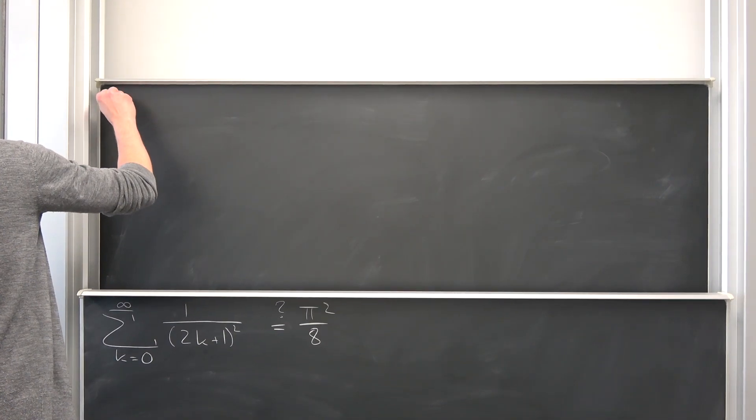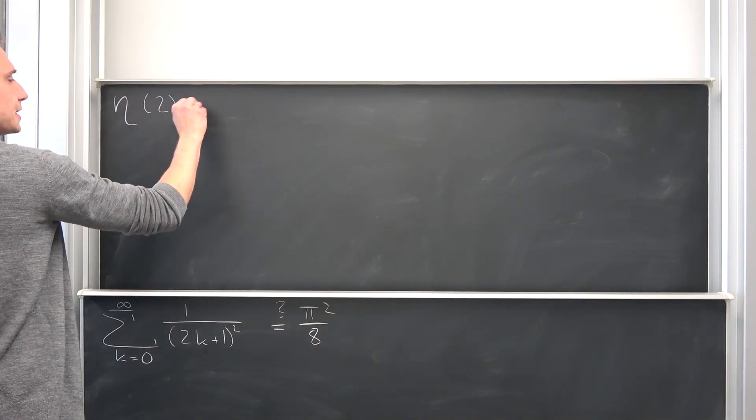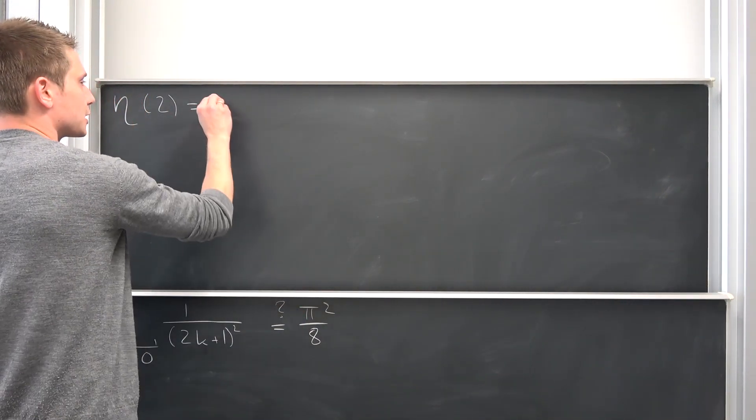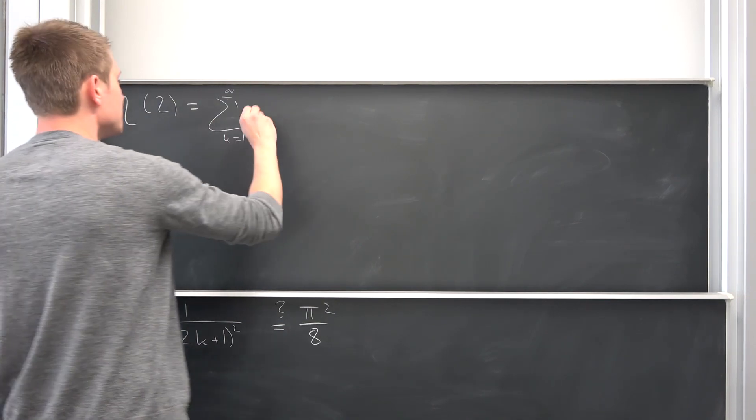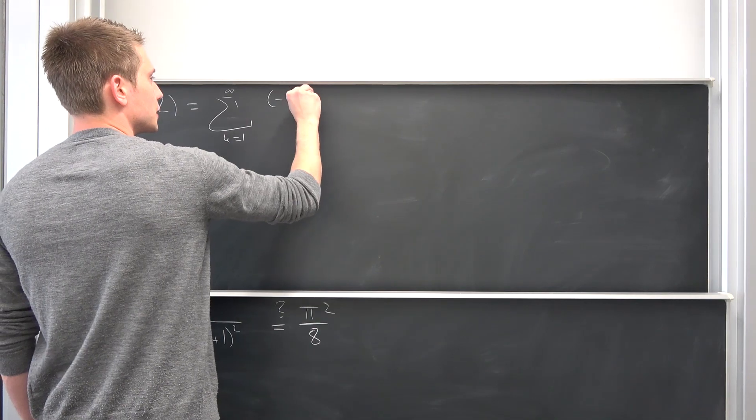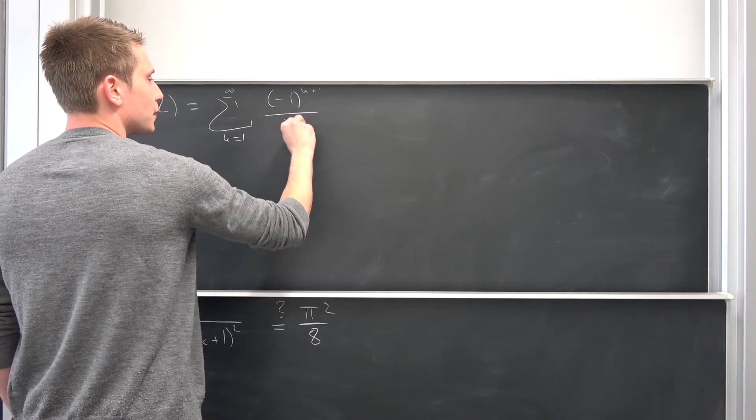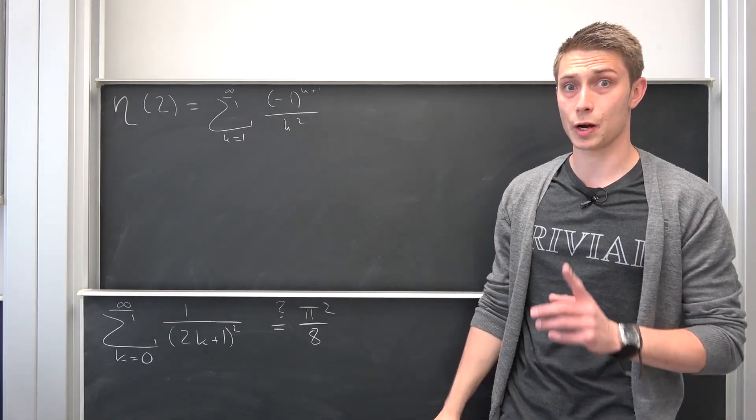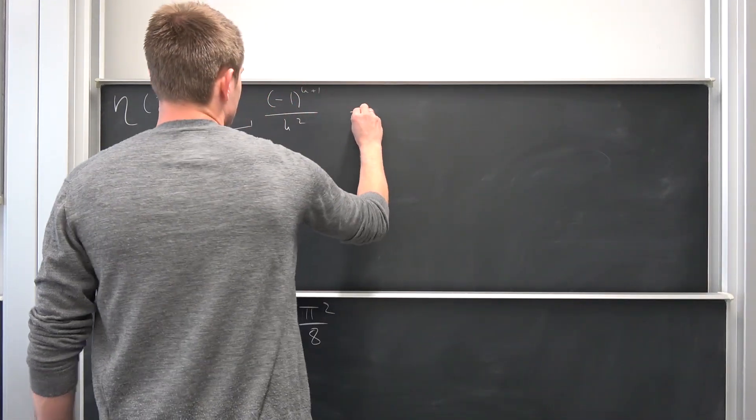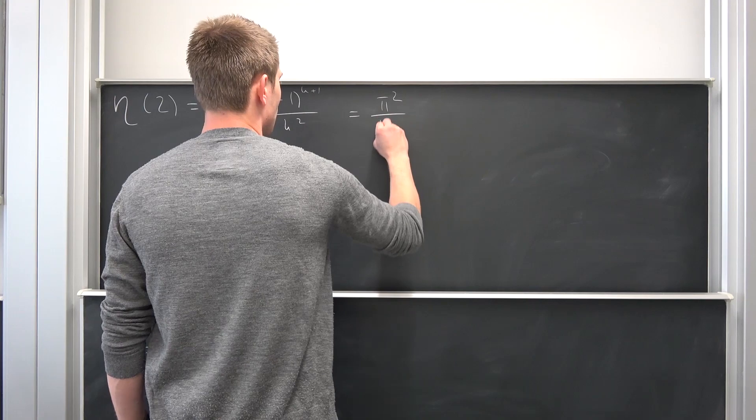the Dirichlet eta function, and they're adding at two. We know what the series actually is. It's a sum running from one to infinity of negative one to the k plus one power over k squared. I have derived this together with the Basel problem in one video. It's going to evaluate to exactly pi squared over 12.